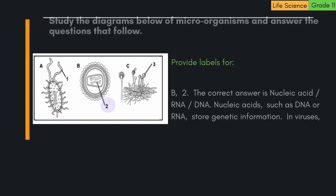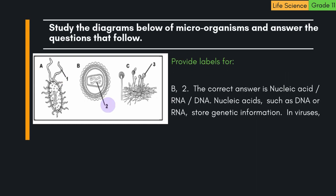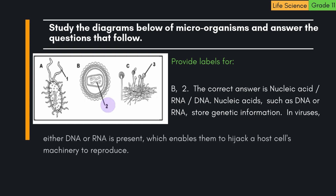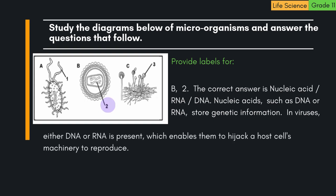B2. The correct answer is nucleic acid — RNA or DNA. Nucleic acids, such as DNA or RNA, store genetic information. In viruses, either DNA or RNA is present, which enables them to hijack a host cell's machinery to reproduce.